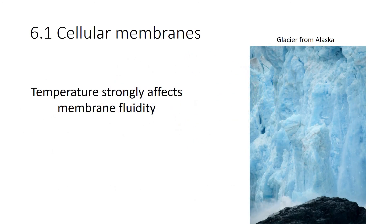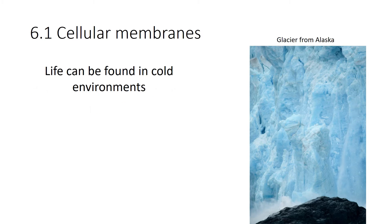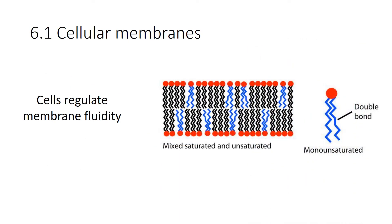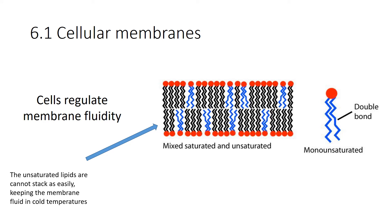Life on this planet can be found in a lot of different environments — water that is practically hot enough to boil, and very cold environments. Temperature strongly affects membrane fluidity. If you're a fish living in very cold environments, you have to have membranes acclimated to that environment. One way you do that is by creating fatty acids that are shorter and unsaturated. Unsaturated lipids don't stack easily, and that keeps the membrane fluid in cold temperatures. It's like stacking paper — if they're all saturated and flat, they stack very easily; if they're kinked and bent, like wadding your paper up, they won't stack as easily.